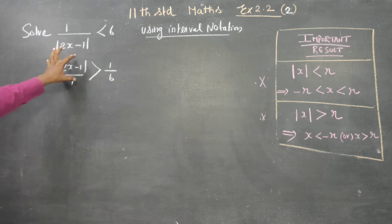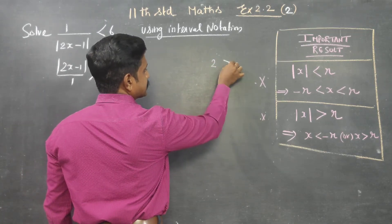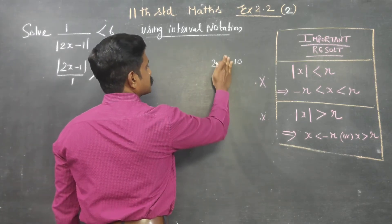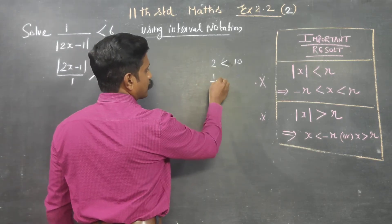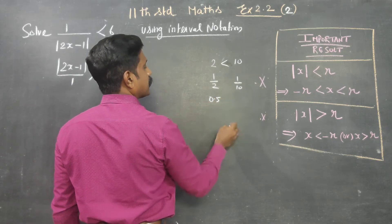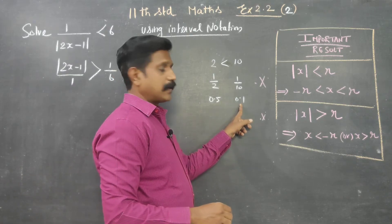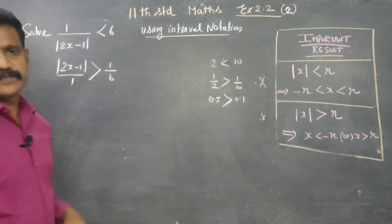The positive value is less than 10. If 2 is less than 10, this is correct. If you put 1 by 2, it becomes 0.5, but 1 by 10 becomes 0.1. When you take reciprocals, this becomes greater, symbol changes. That concept is reciprocal changes the symbol from less than to greater than.